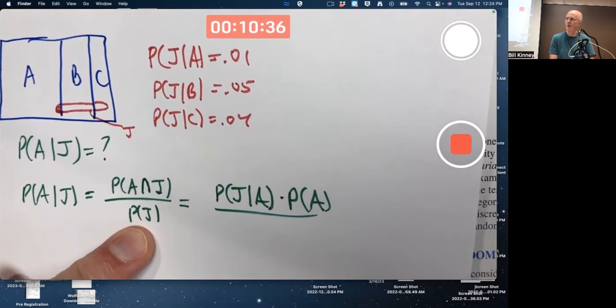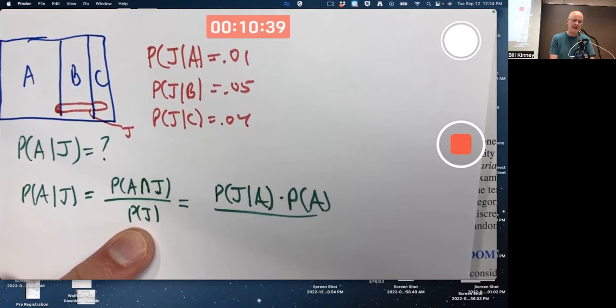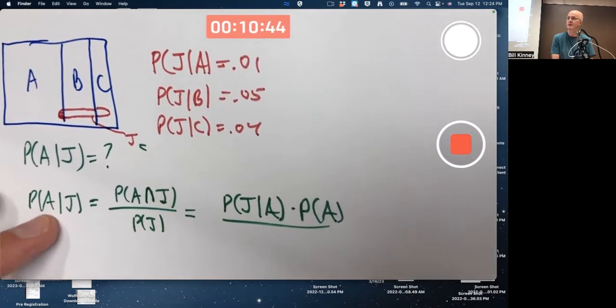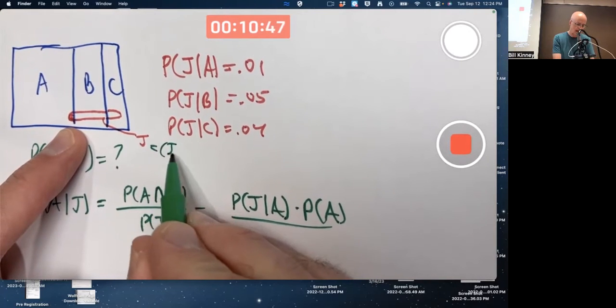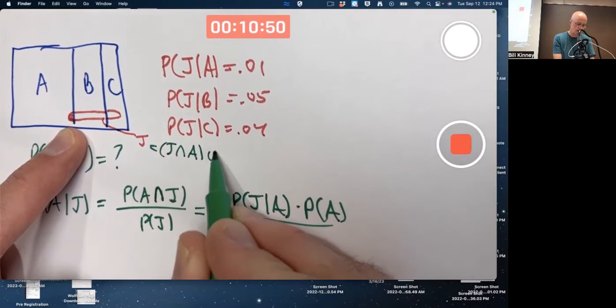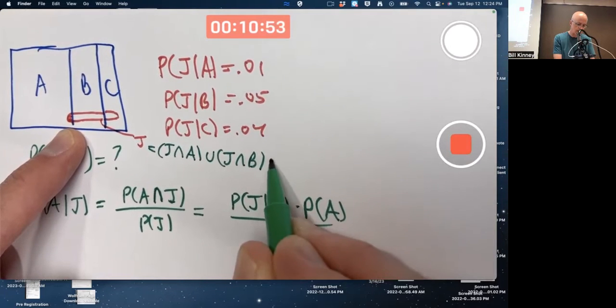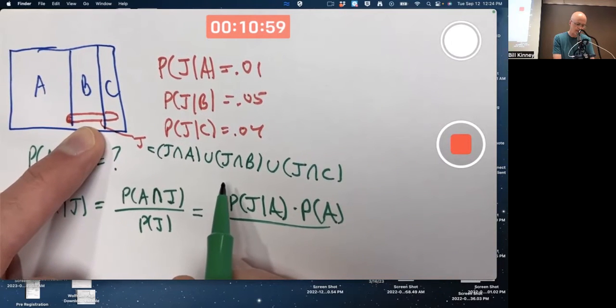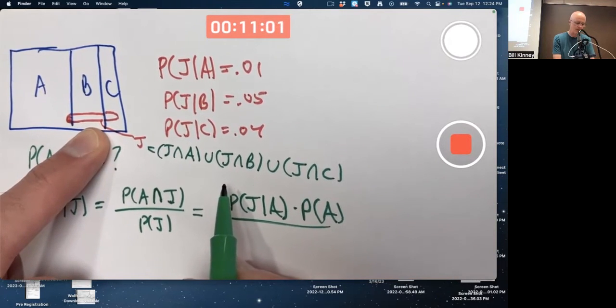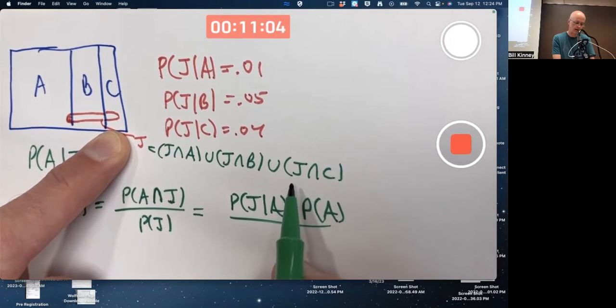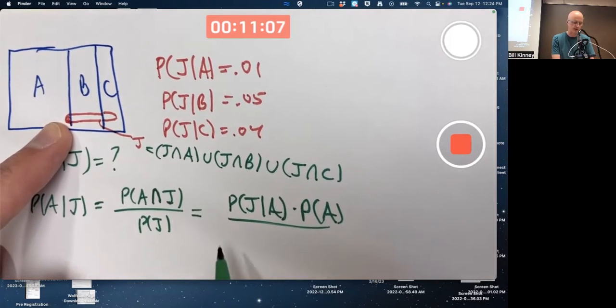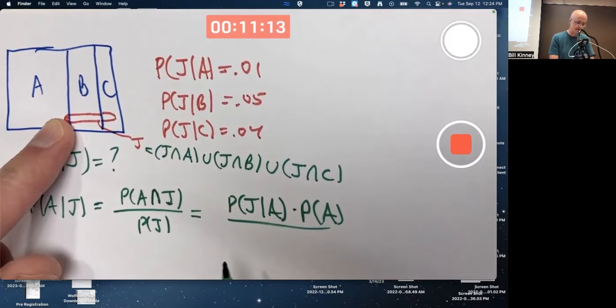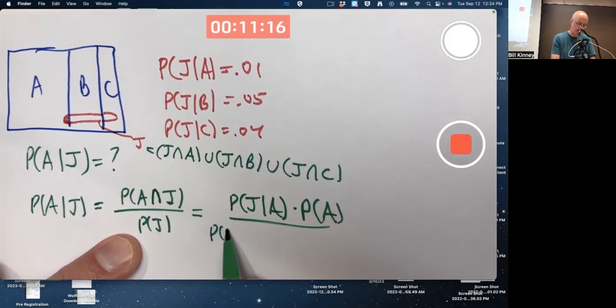And with this one, before I use the general multiplication rule, think about breaking J into three pieces. The union of three mutually exclusive events. J intersect A union with J intersect B union with J intersect C. J intersect A is that little region right there. J intersect B is this middle region right there. J intersect C is this right region over here. They are mutually exclusive and their union is all of J. Therefore, by axiom three, the addition rule for mutually exclusive events, I can write this as a sum of three probabilities.